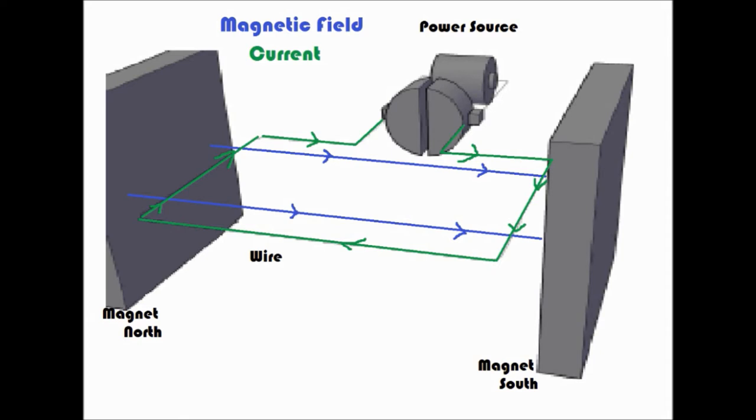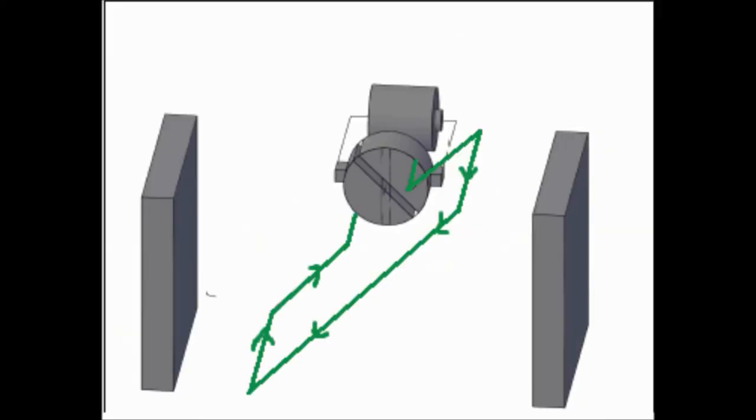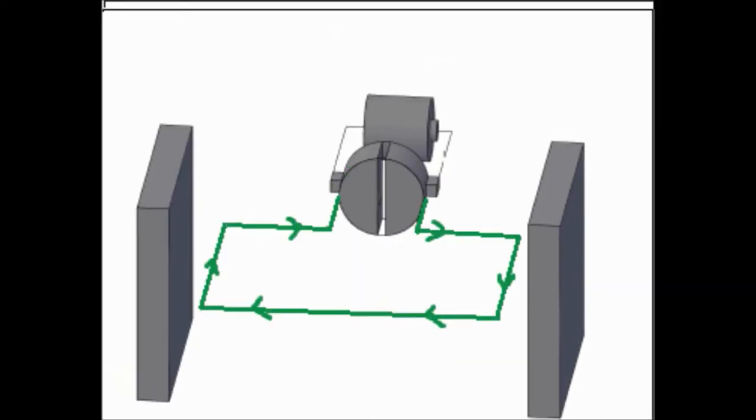If the wire is arranged into a loop like the one in this diagram, then when the current passes through it, one side will experience an upward force and the other side a downward force. These combined forces create torque and spin the wire.